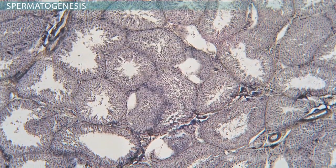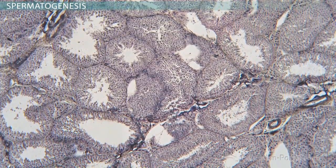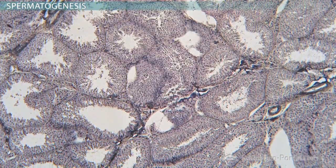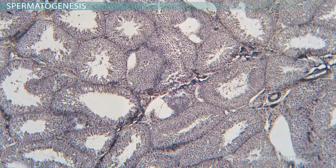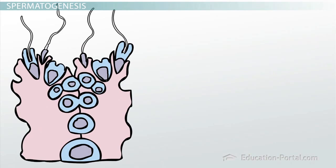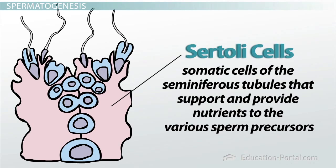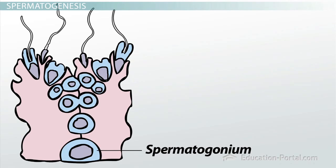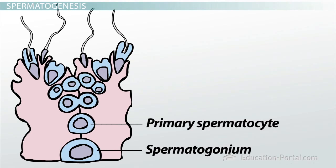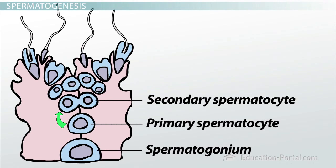Now let's see how all of this works in the context of the seminiferous tubules. As you can see from this highly magnified section, the testes are packed with seminiferous tubules, which produce millions of sperm and release them into the lumens of the tubules. The tubules are lined with an epithelial layer of Sertoli cells, which are somatic cells that support and provide nutrients to the various sperm precursors. The rapidly dividing spermatogonia are located at the base of the Sertoli cells. When a spermatogonium divides by mitosis, one of the daughter cells will take a position between Sertoli cells, enter meiosis, and become a primary spermatocyte. As meiosis continues, the primary spermatocyte migrates away from the base of the Sertoli cells and divides to form two secondary spermatocytes.